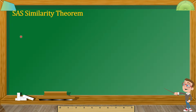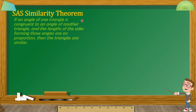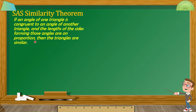Let's define first what SAS Similarity Theorem is. It states that if an angle of one triangle is congruent to an angle of another triangle, and the lengths of the sides forming those angles are in proportion, then the triangles are similar. By the way, SAS stands for side-angle-side, and that angle is the included angle.